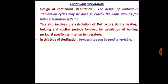In this type of sterilization process, temperature can be used as a variable. One major difference between continuous and batch sterilization is that in batch sterilization the frequently used highest temperature is 121°C. However, in continuous sterilization that barrier is not there; we can raise the temperature beyond 121°C, which leads to a decrease in holding time.